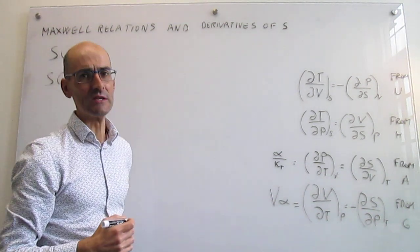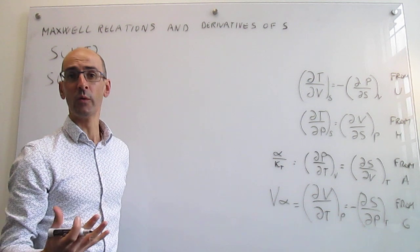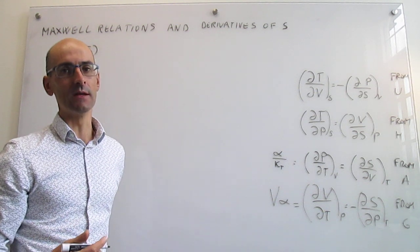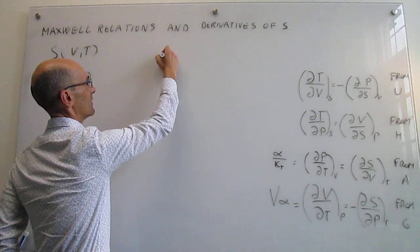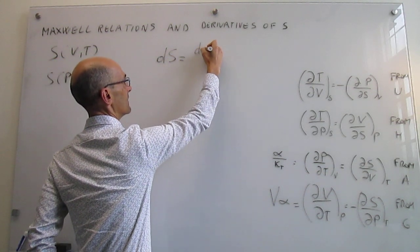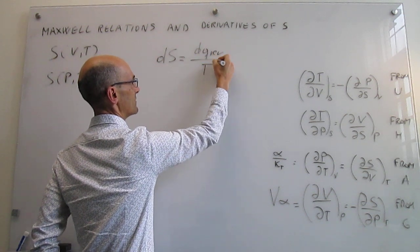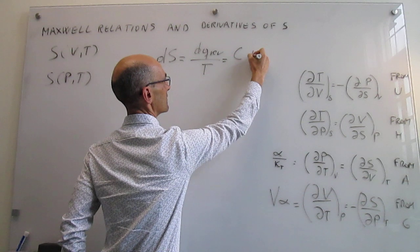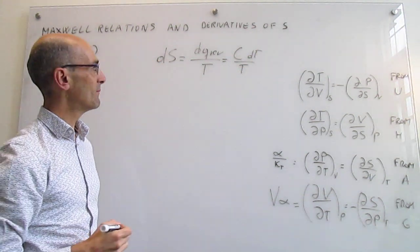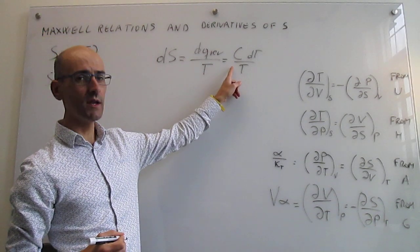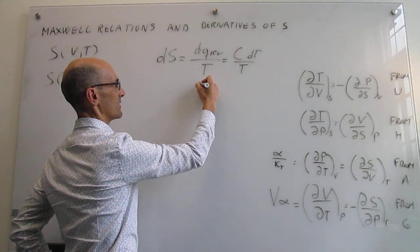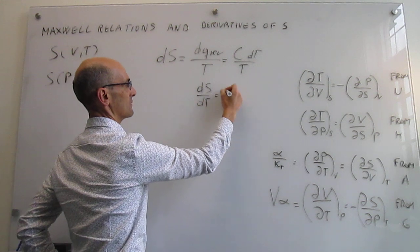We have already studied how the entropy changes with temperature when we were studying changes in entropy during heating and cooling. When you heat or cool, the change in entropy is simply the change in the reversible heat over the temperature, which is C dT over T. Grouping terms gives us: dS/dT = C/T.